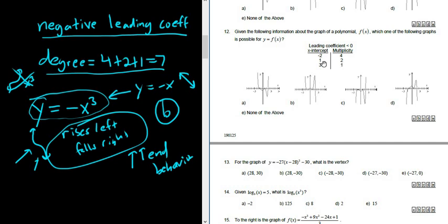Two is also even. So at one, it should also touch and turn around. And sure enough, it does. And then one is odd. So at three, it should cross the x axis. And sure enough, it does.